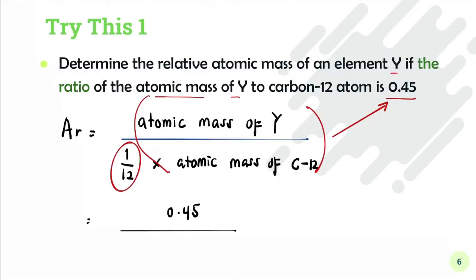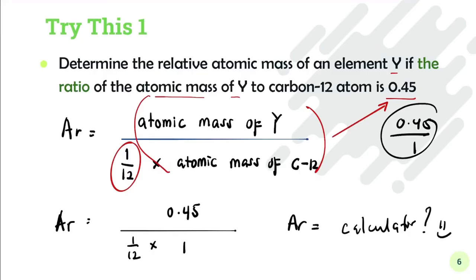Yes, like this. So 0.45 divided by 1/12 times 1. Where did we get that? From the question - 0.45. If it's a ratio, it means 0.45 over 1. So Ar equals - let the calculator do the job.